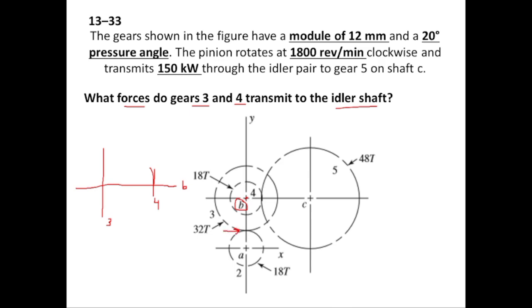Gear 2 exerts a force on gear 3 in the tangential direction and in the radial direction. The tangential force F23T is in the x direction. Gear 5 exerts a force on gear 4 along the pressure line, with the gear rotations being: gear 2 clockwise, gears 3 and 4 anticlockwise, and gear 5 clockwise. The force F54 has a tangential component F54T and a radial component F54R.